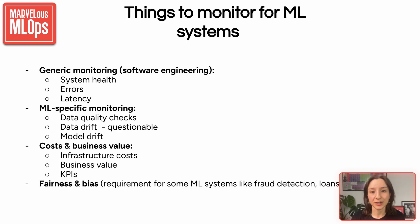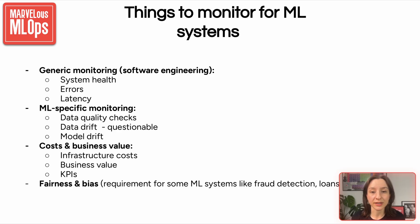And then we have ML-specific monitoring — this is where things get a bit more nuanced. First, we have data quality checks: are we receiving data in the format we expect? Are there missing values, unexpected ranges, or broken pipelines? Then there is data drift, which refers to changes in the distribution of incoming data over time. While it's often discussed, it's also a bit questionable — not every drift is harmful, so we need to ask: is this drift meaningful or is it just noise? And then there is model drift. Unlike data drift, this is about the performance of the model itself degrading over time — maybe it no longer predicts accurately due to underlying changes in the real world.